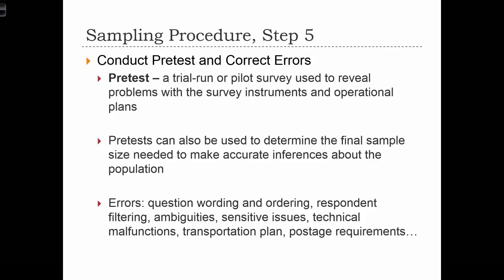Step five is to conduct a pretest and correct any errors. A pretest is a trial run or pilot survey used to reveal problems with the survey instruments and operational plans. Pretests can also be used to determine the final sample size needed to make accurate inferences about the population. The initial characteristics of the population that we learn about through a pretest sample can help us determine how many respondents we need in our full sample for precise inferential statistical procedures.